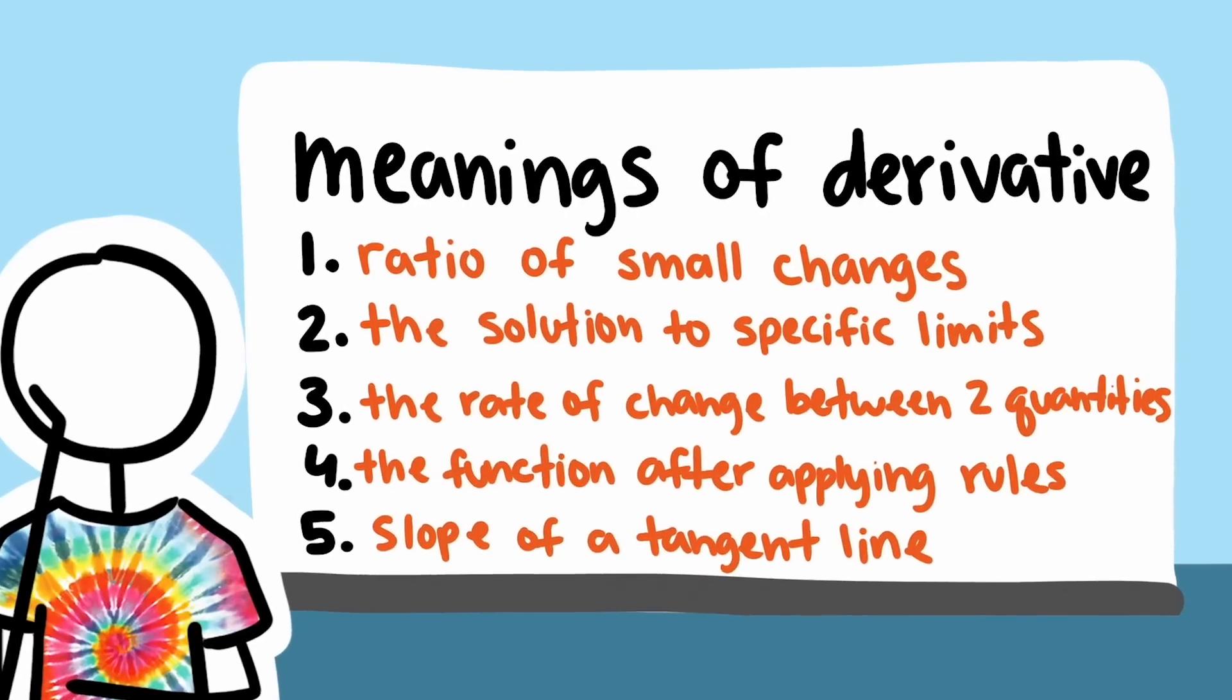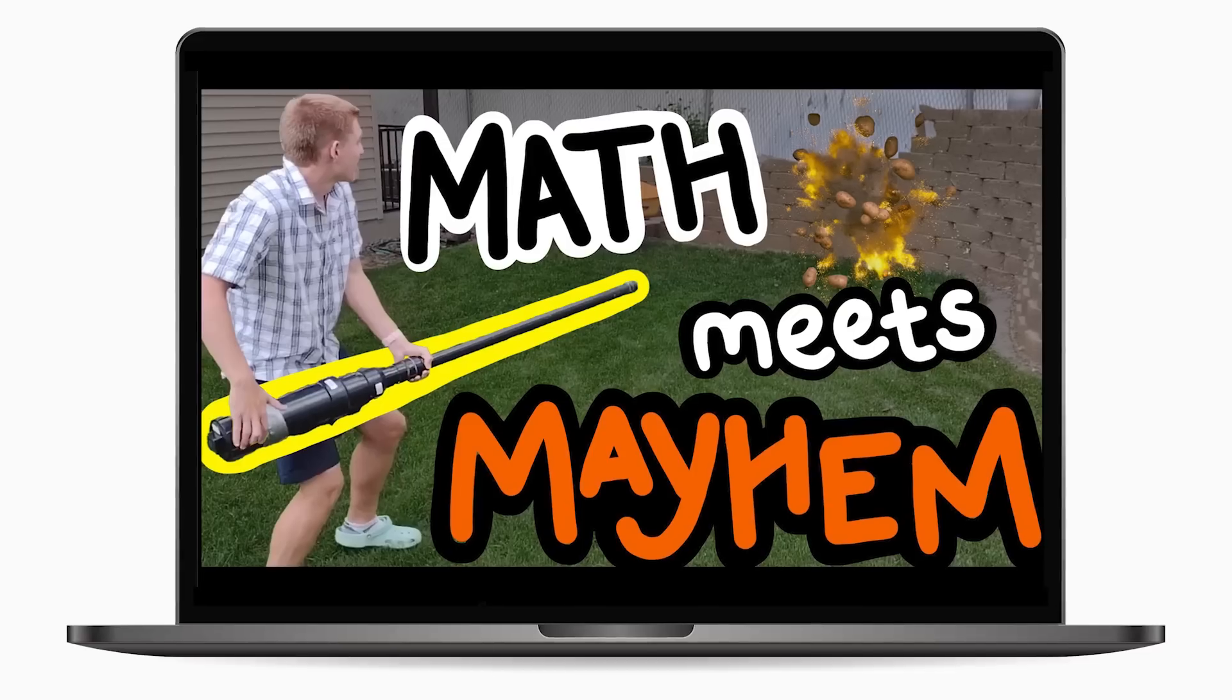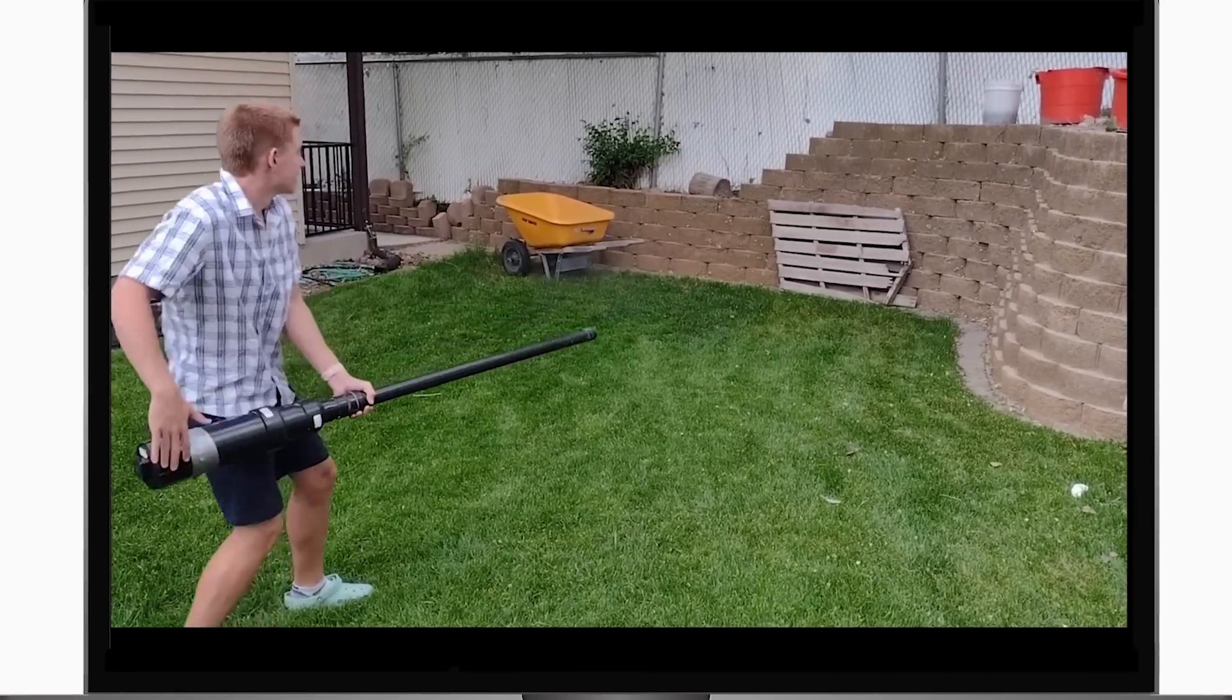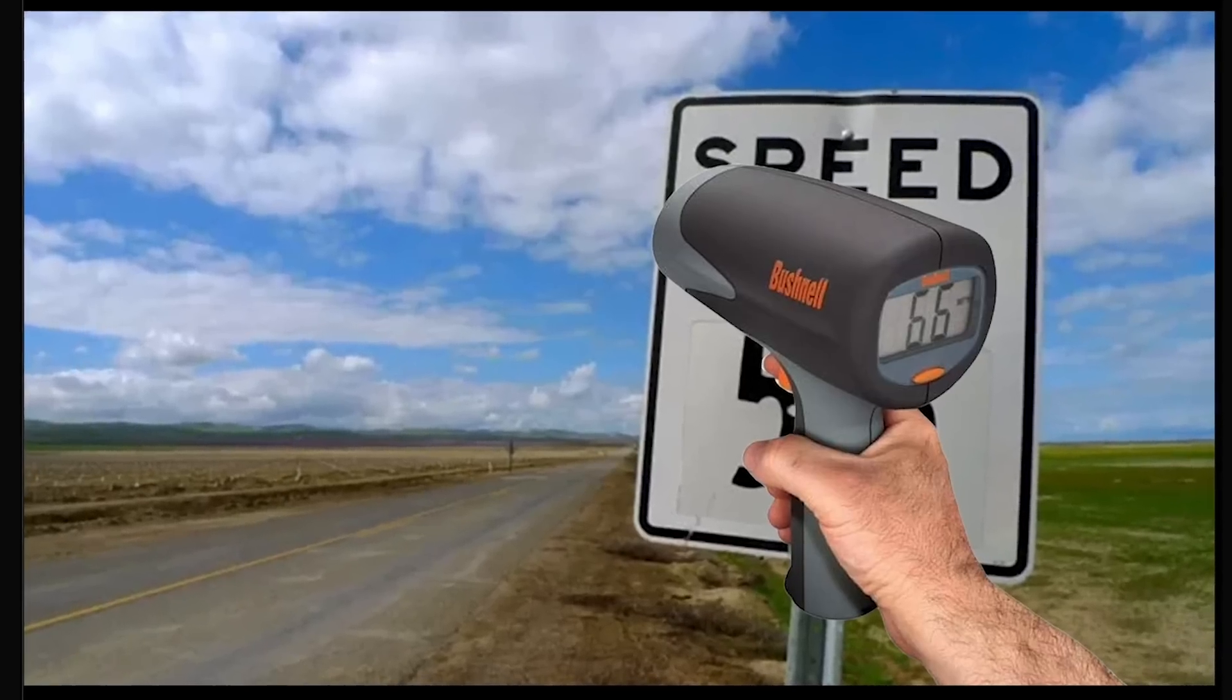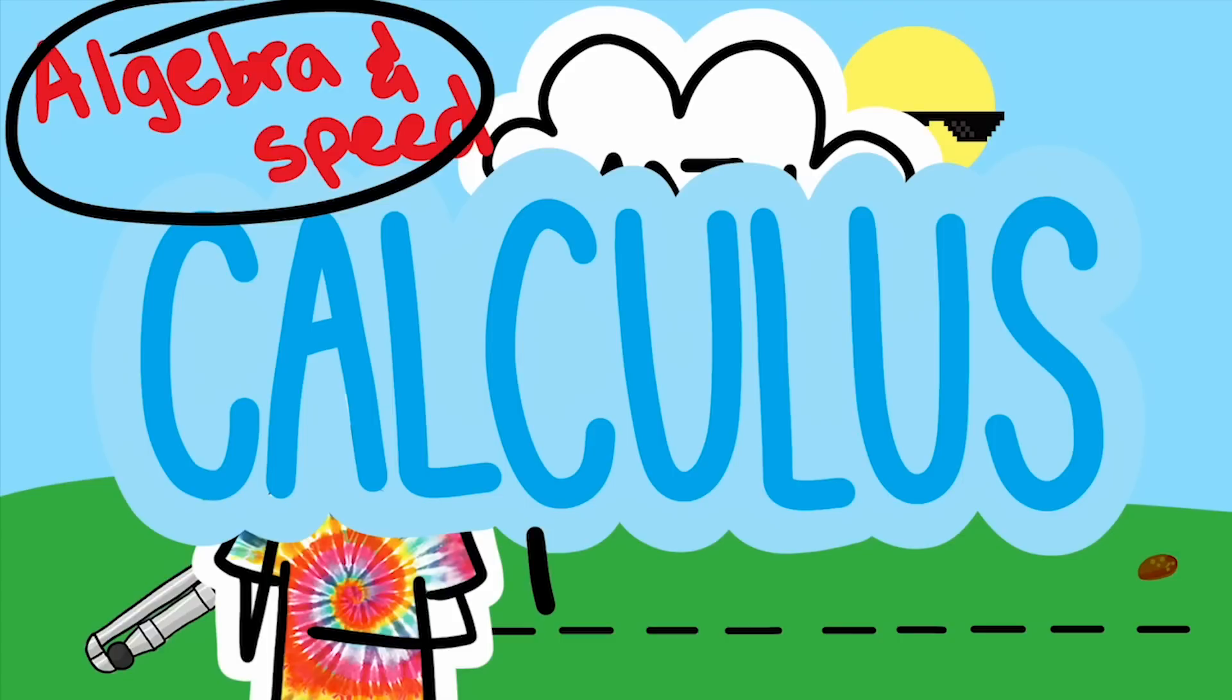Ideally, students leave calculus being able to think about derivatives as all of these, since each of these could be helpful for different situations. In a previous video, we did a little math to find out how fast my potato gun shot potatoes. We didn't need calculus to find its muzzle velocity, we just used some algebra and the meaning of speed. Let's use the potato gun example to talk about each of these five meanings of the derivative.